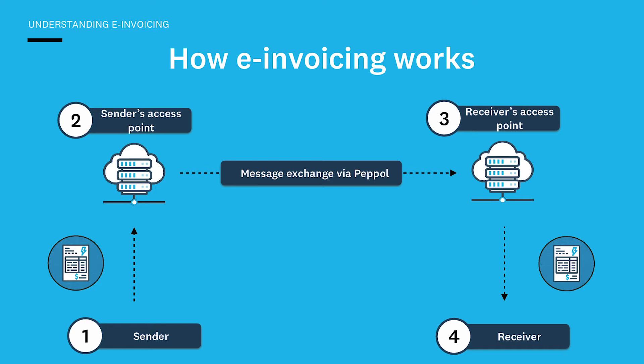To be able to e-invoice your customers, both you and your customer need to be registered on the e-invoicing network. Both the sender and the receiver subscribe to an access point provider. It doesn't matter if you use different access point providers — there are many available — and the message is sent between the two access point providers. That message exchange occurs between points two and three on that diagram. The message is sent in a standard PEPL format, so it doesn't matter what accounting software the buyer and the seller are using. One business can send an invoice digitally on the e-invoicing network to another business.